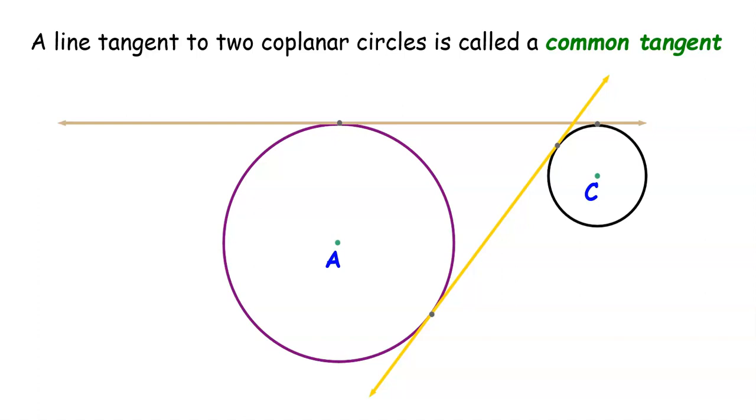Notice an important difference between the two tangents on the screen. The beige tangent at the top goes across the top of both circles and doesn't pass between them the way the yellow line does. Specifically, that yellow line crosses through a segment that connects the centers of these two circles. Because those two tangents are different in this important way, we have different names and terminology for them.